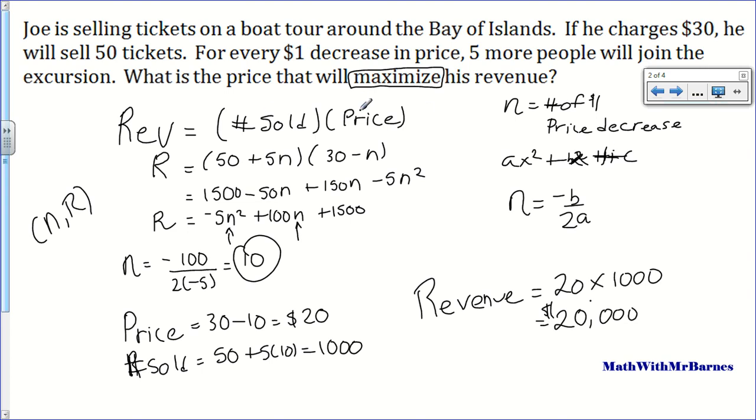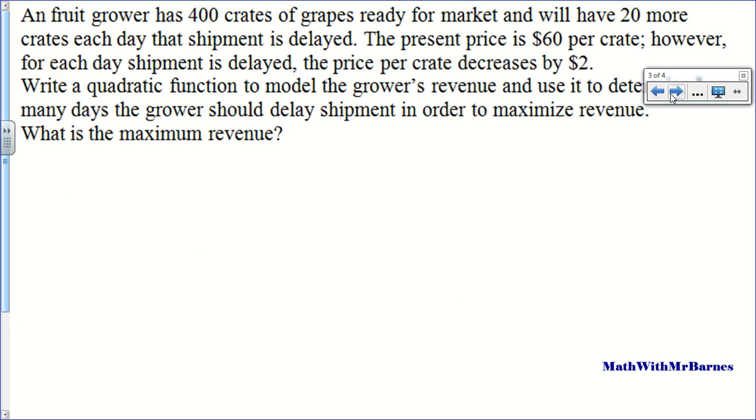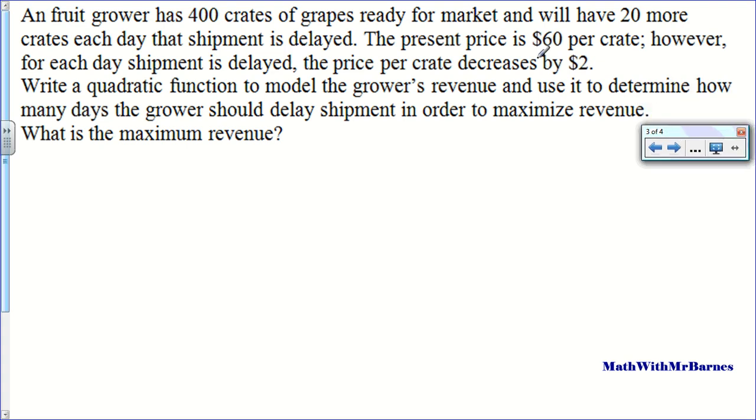You got, you know, I think that for the most part this formula will never fail you. For the most examples that I've seen anyway. Let's do two more. So this one's a little more convoluted, I'll say. Fruit grower has 400 crates of grapes ready for market and will have 20 more crates each day the shipment is delayed. The present price is $60 per crate. However, for each day the shipment is delayed, the price decreases by $2. So write a quadratic formula, yada, yada, yada. We want to find the max revenue basically.